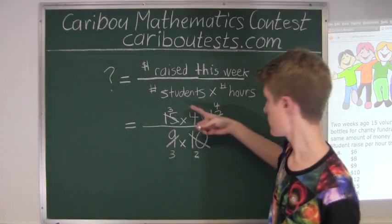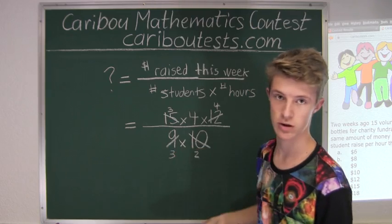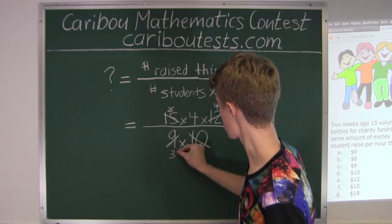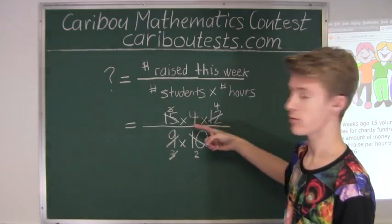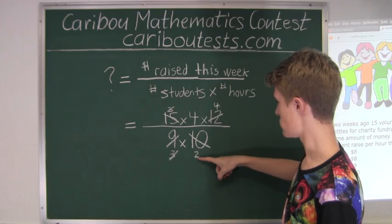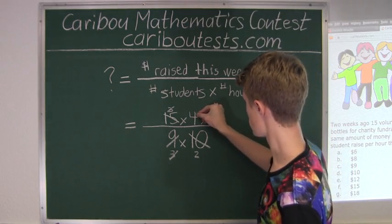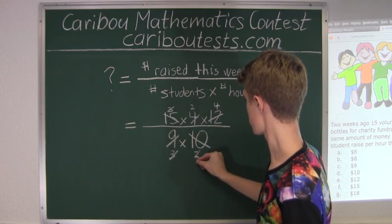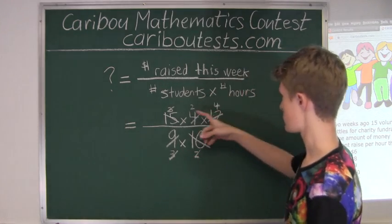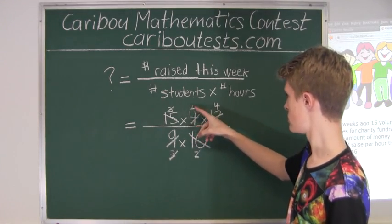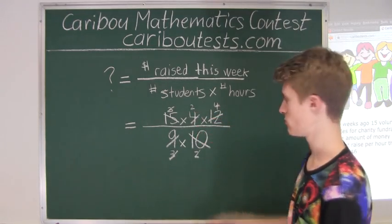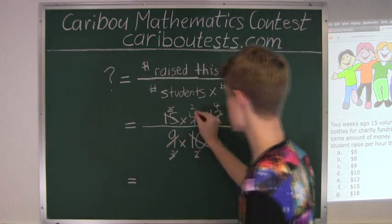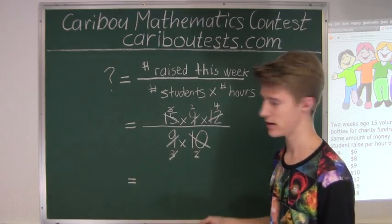And as we can see here, again we have 3 and 3, which we will cancel out to 1 and 1. And then here we have 4 and 2, which goes to 2 over 1. So what we are left with is just 2 times 4 in the numerator, and we know 2 times 4 is equal to 8.